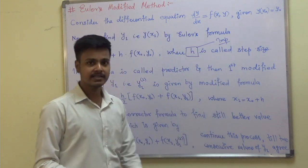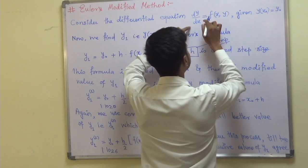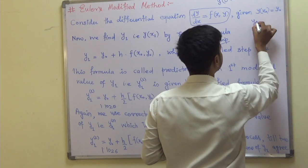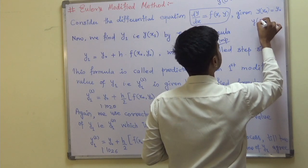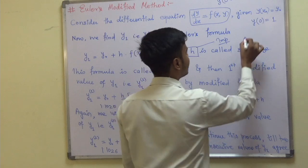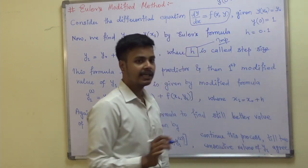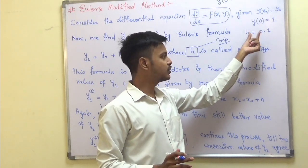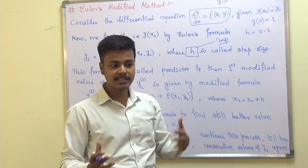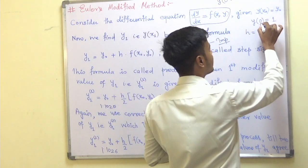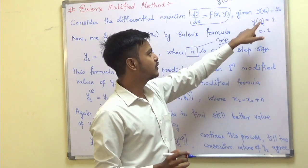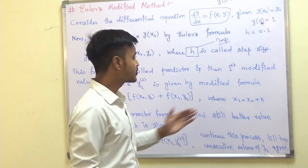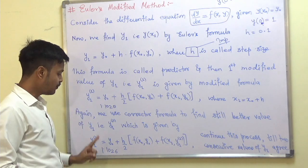Step size is very important. Suppose we have to find the solution at y(0.2), and the initial value y(0) is given with a step size of 0.1. Our objective is to get y(0.2). To go from 0 to 0.2 with a step size of 0.1, how many steps are required? Obviously two. So with this setup we will get the answer in two steps.